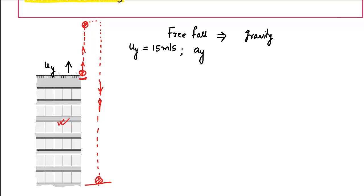Since this is one-dimensional motion, we need to choose an axis and an origin. We choose the origin at the point where the motion starts — the roof railing. The y-axis points upward. So anything in the upward direction is taken as positive and anything in the downward direction is taken as negative. For example, acceleration due to gravity is downward, so it is negative. But the initial velocity is upward, so it is positive.